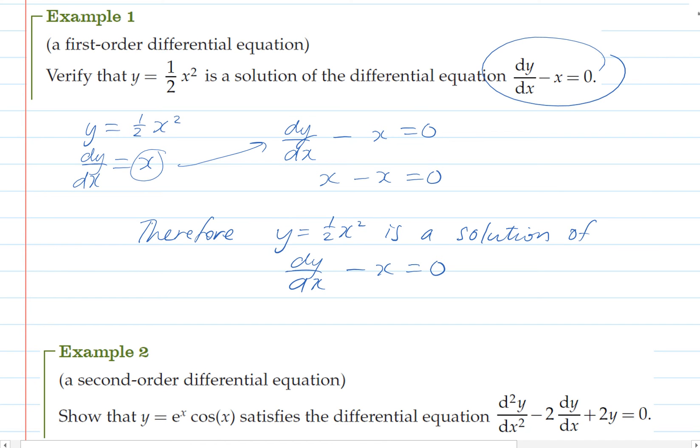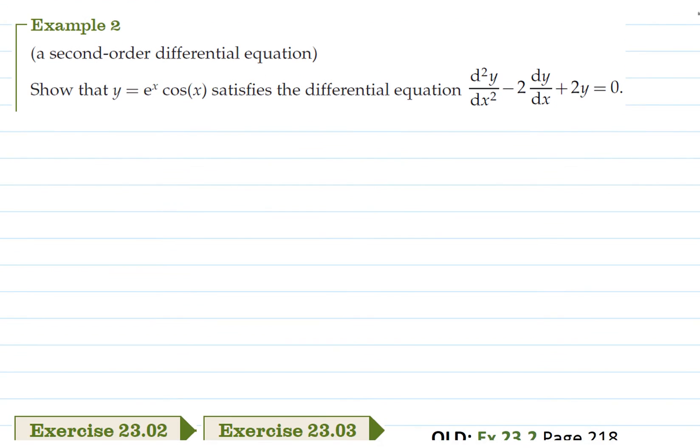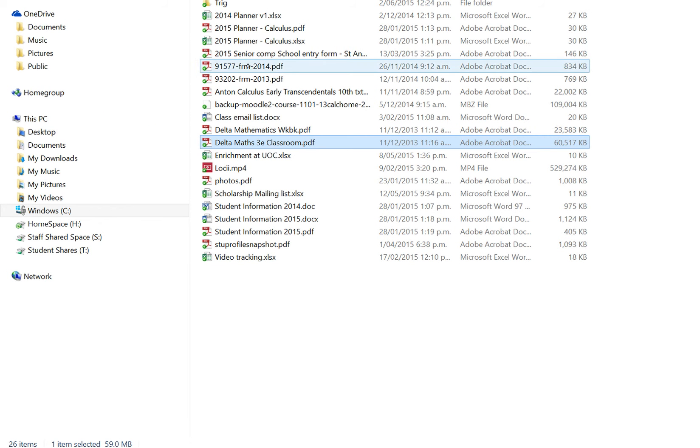Okay for our next example we're going to have to double differentiate because this is a second order differential equation and so this is our function. So I'm going to write it as y equals uv where u equals e to the x and v equals cos x.